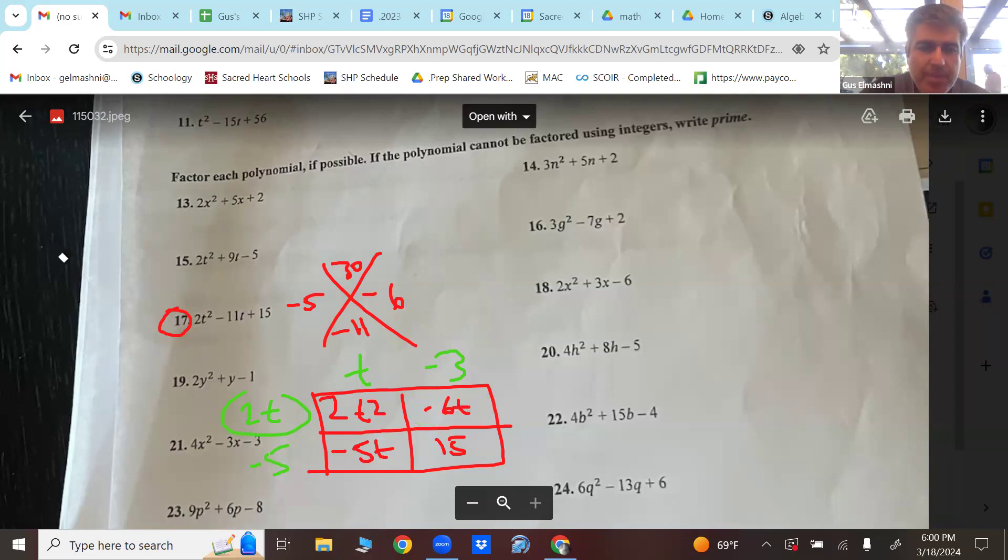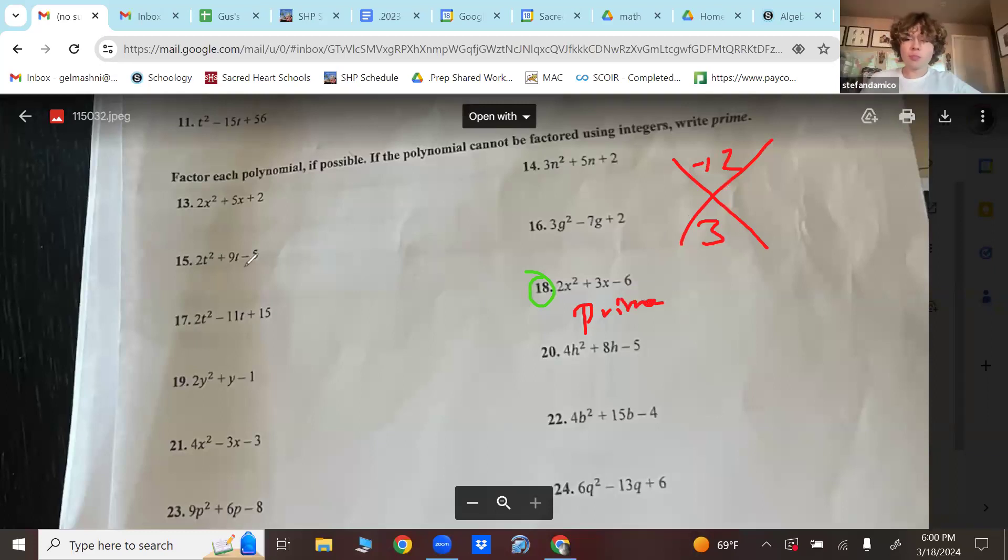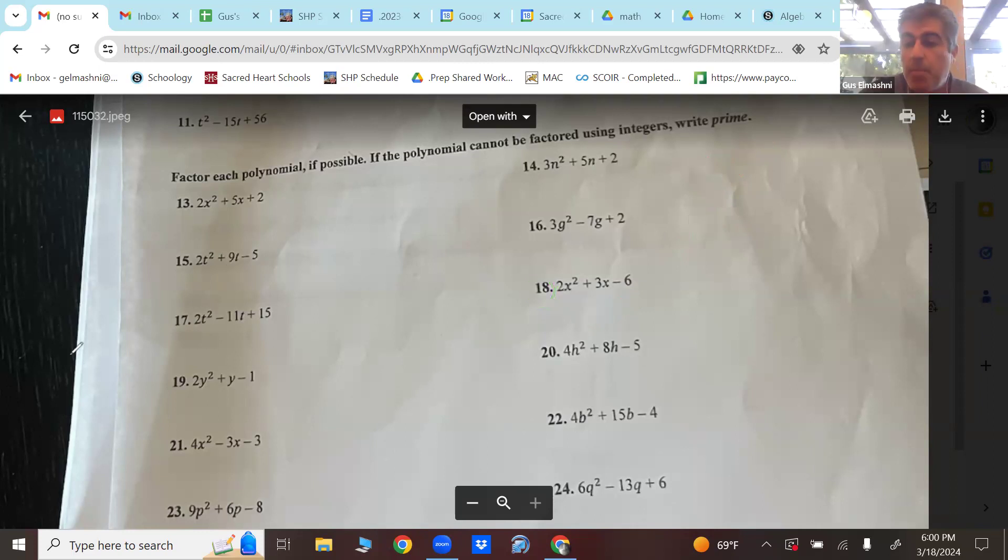Let's do one more. 18. Actually, this is prime. Because you can't find two numbers that multiply 12 and add to three as integers. So that's actually prime. Let's do one that's not prime. What do I write if it's a prime number? You write prime. It just means it can't be factored.